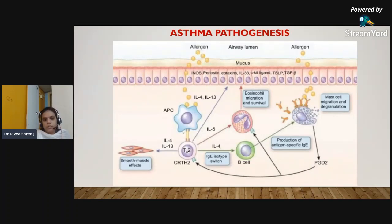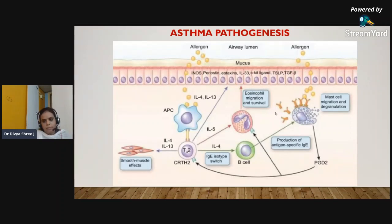When an allergen is presented to the antigen-presenting cell, it will activate Th2 cells, which will release interleukin-4, interleukin-5, and interleukin-13. All these will further activate B cells, which will release immunoglobulin E, causing degranulation of mast cells by binding to them. The mast cell when bound to IgE can cause degranulation, releasing histamine, prostaglandins, and leukotrienes, which cause smooth muscle contraction and stimulate the inflammatory pathway.